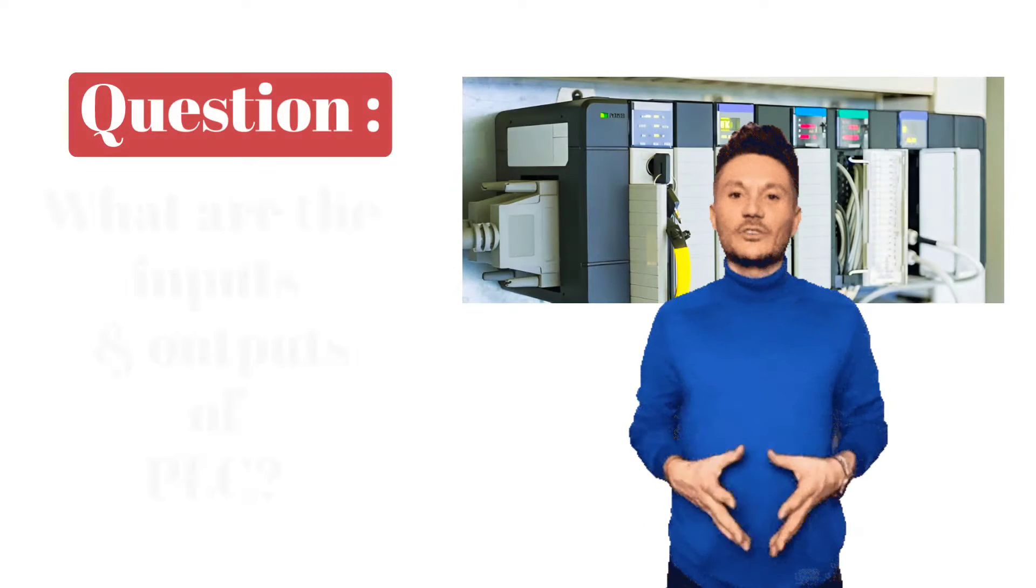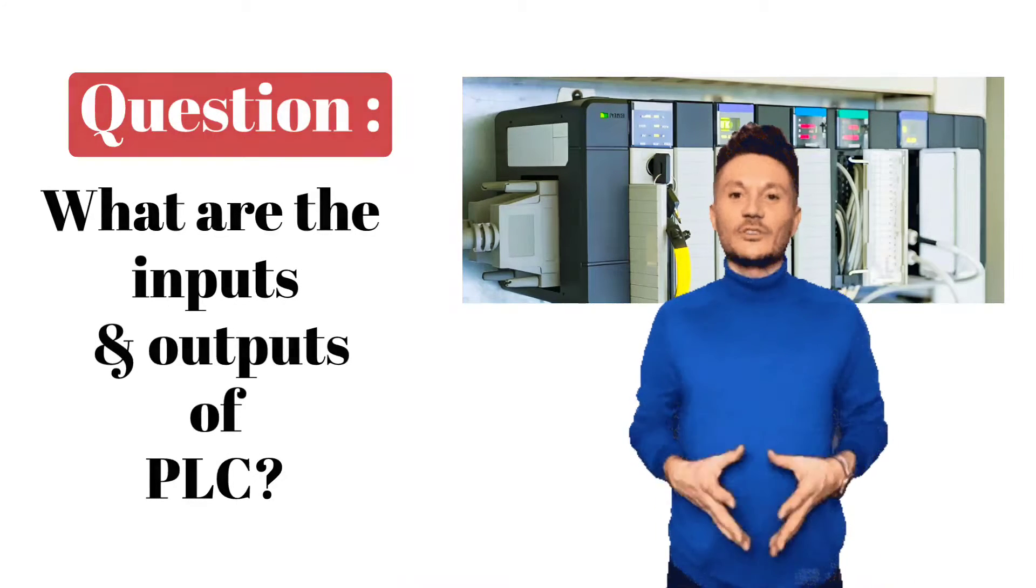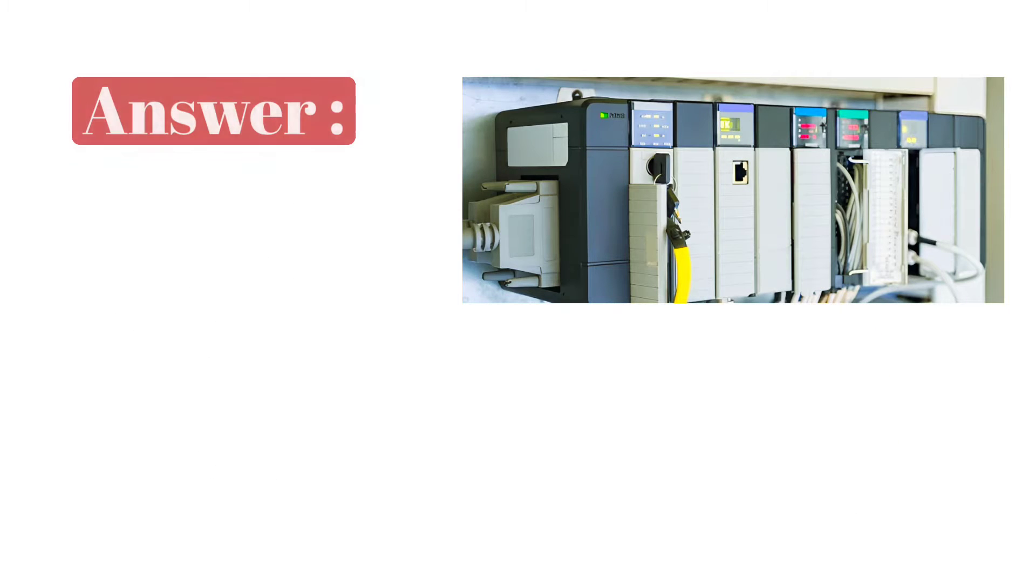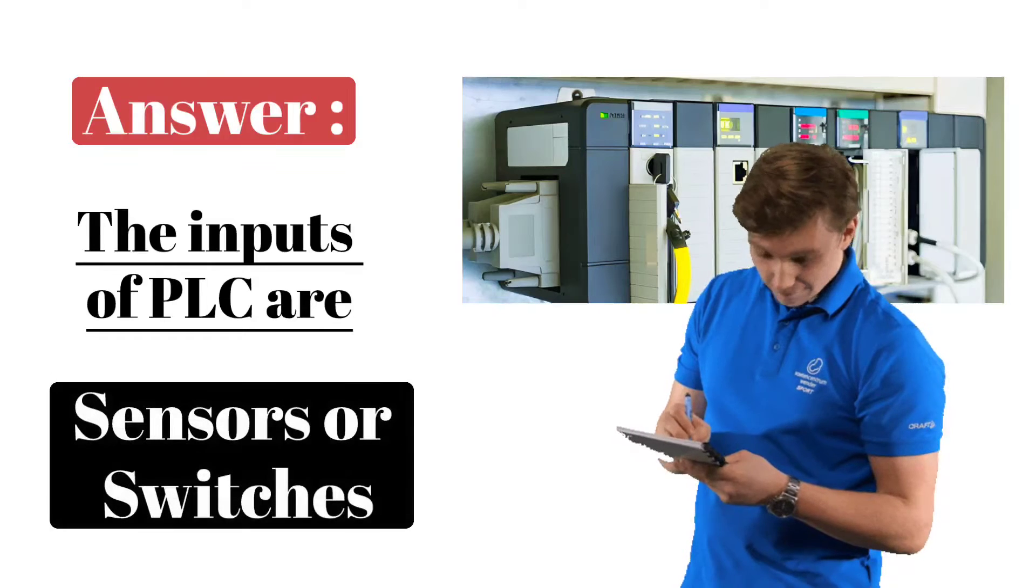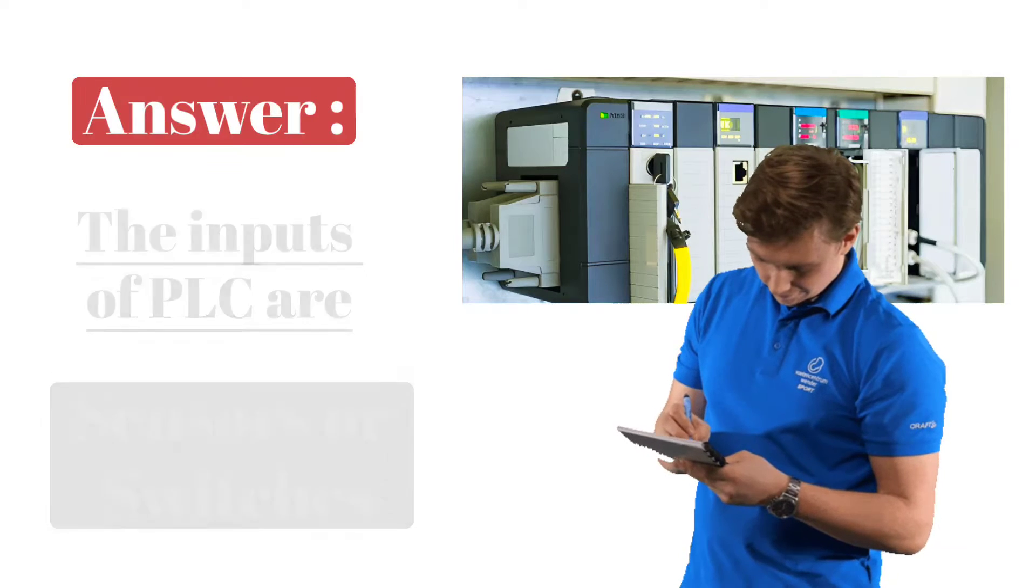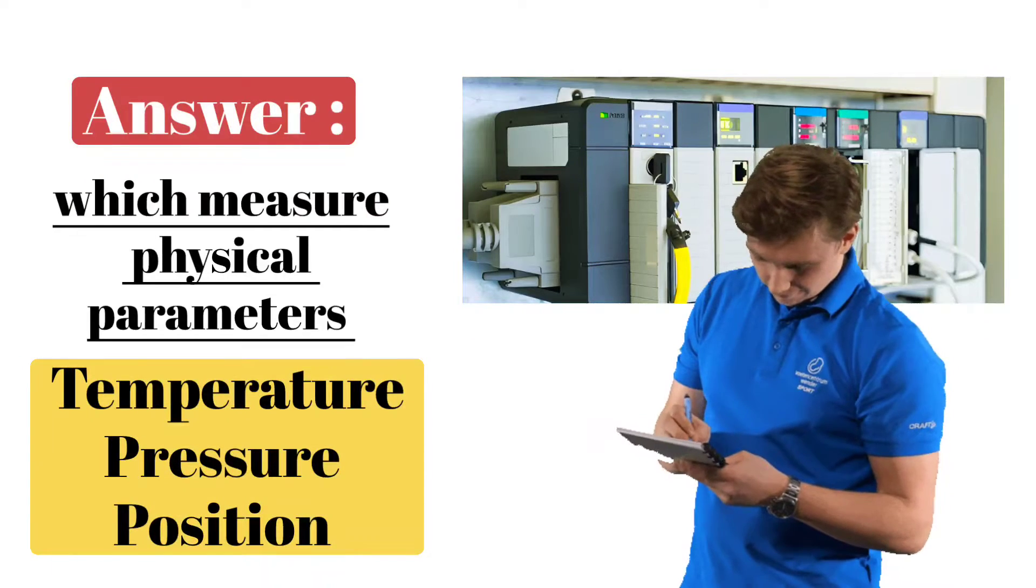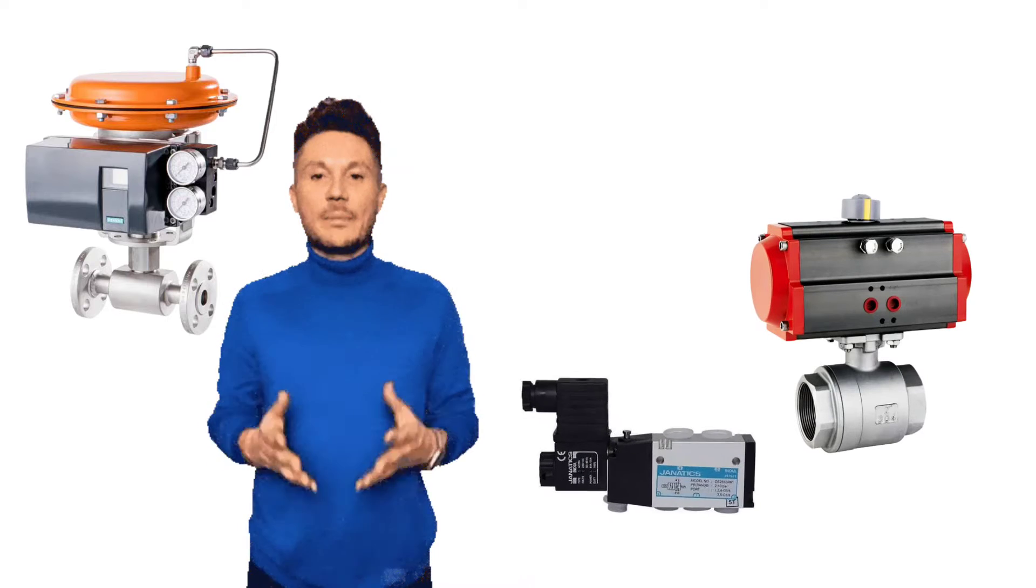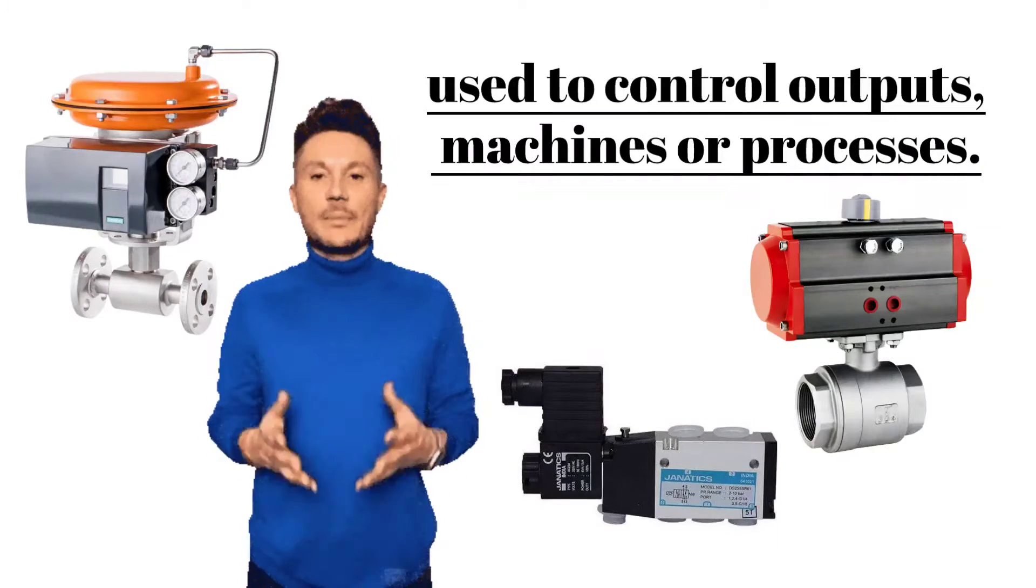Next question is, what are the inputs and outputs of PLC? Answer is, the inputs of PLC are sensors or switches which measure physical parameters like temperature, pressure, and position. Valves, actuators, or solenoids are used to control outputs, machine, or process.